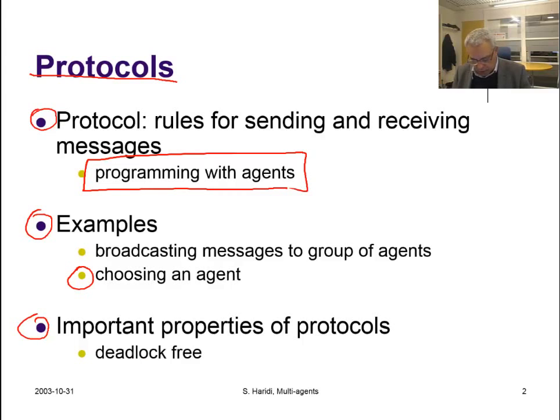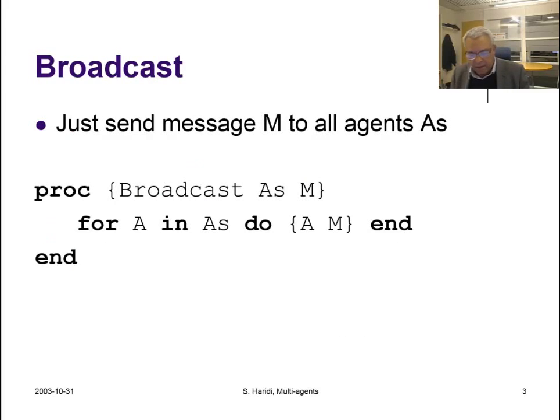So let us see how to implement a very simple protocol which is a broadcast protocol. When an agent gets a request, it wants to broadcast a message to a set of agents, and this we can implement quite easily with our abstraction. So here is a procedure called broadcast. Here is a set of agents, and here is a message we want to send. We just send the message to every agent. You remember if A is an agent, M is a message, this will be a send operation to that agent.